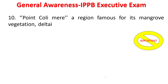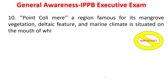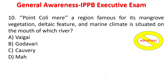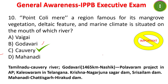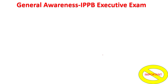Next question: Point Kolimari, a region famous for its mangrove vegetation, deltaic feature, and marine climate, is situated on the mouth of which river — Vaigai, Godavari, Kaveri, or Mahanadi? The answer is Kaveri River. Point Kolimari is in Tamil Nadu. Godavari is 1465 km long, starts from Nashik; Polavaram Project is on Godavari in AP and Kaleshwaram in Telangana. Nagarjuna Sagar and Srisailam dams are on Krishna. Hirakud dam is on Mahanadi in Chhattisgarh.